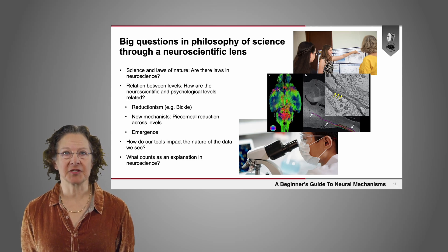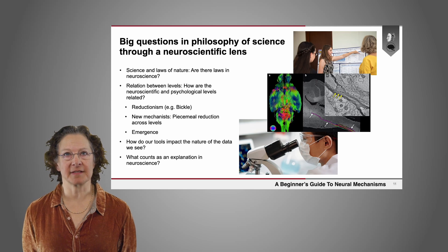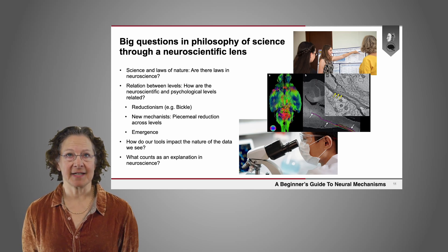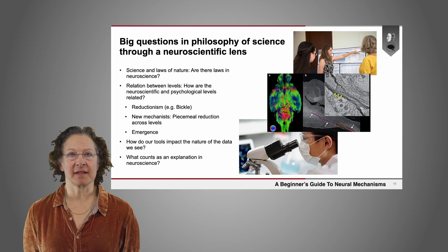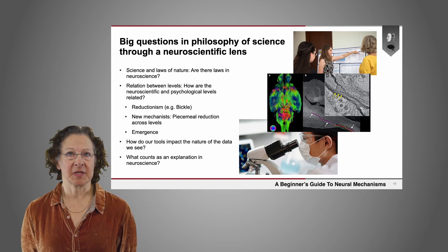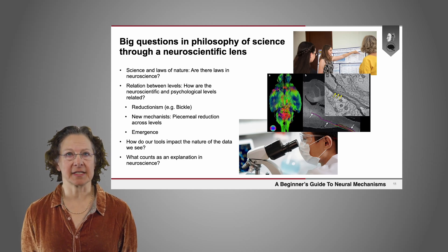Another big question is the way in which different levels of neuroscience interact. In particular, the highest level — which you might think of as the psychological level — seems quite different from looking at the biological level. So how are the neuroscientific and psychological levels related?